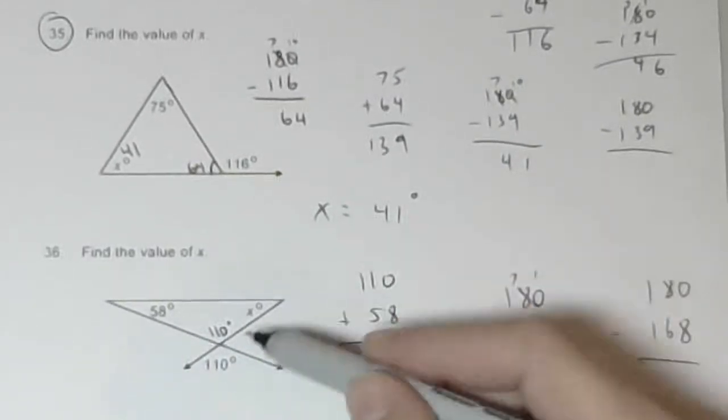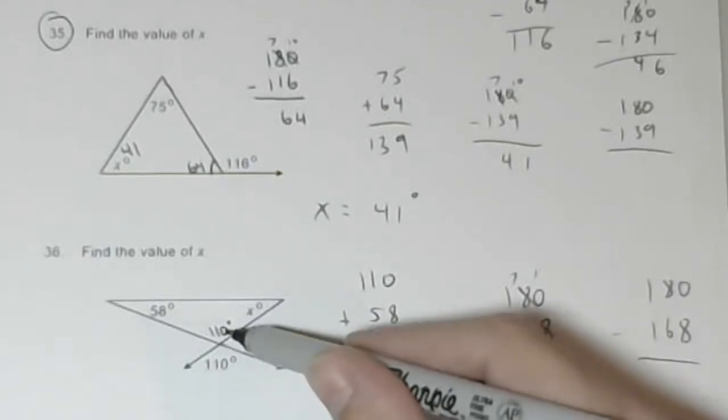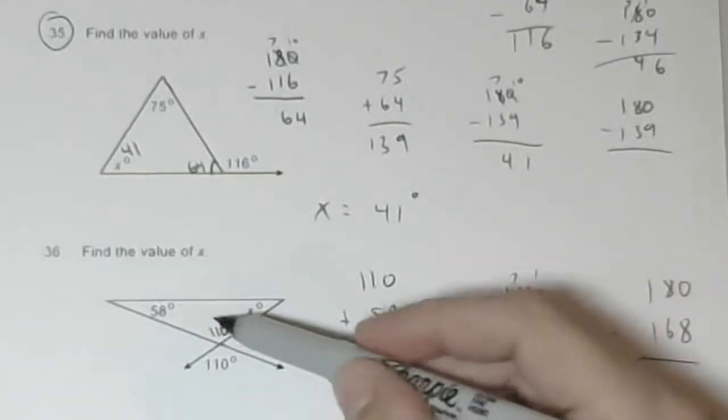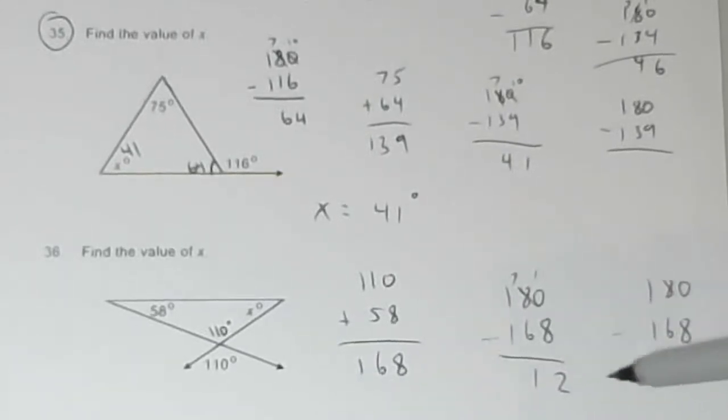At number 36 we have vertical angles so both these angles are 110. We add 110 and 58 to get 168, we subtract that from 180 and x equals 12.